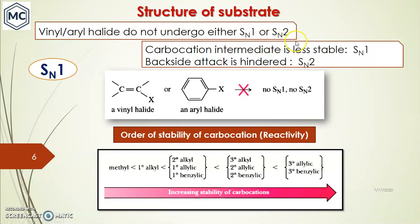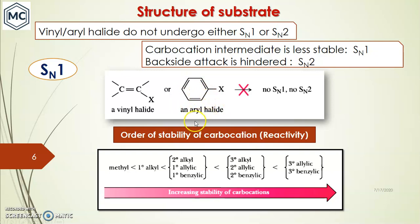However, vinyl and aryl halides do not undergo either SN1 or SN2 mechanism. Not by SN1, because the vinylic or aryl carbocation is less stable — a positive charge on an sp2 carbon atom is not favorable. Not by SN2 either, because backside attack of the nucleophile is blocked by the electron cloud of the pi system, which prevents the approach of the nucleophile. The reactivity order in SN1 depends on carbocation stability: tertiary allylic or benzylic is most stable.